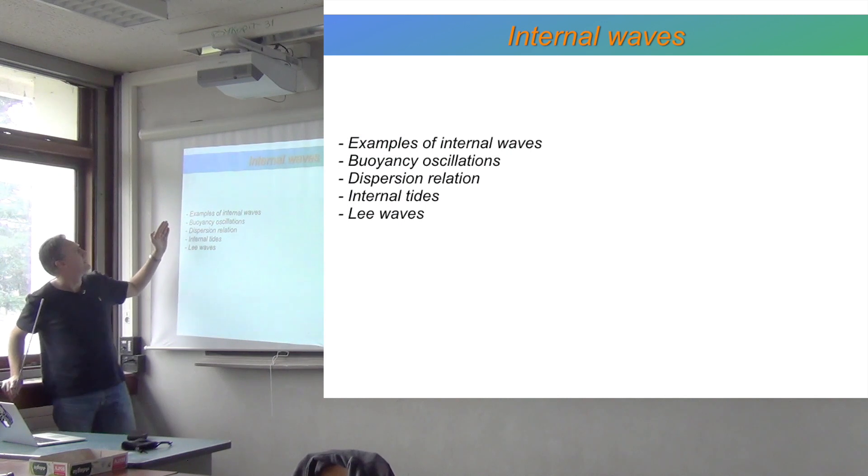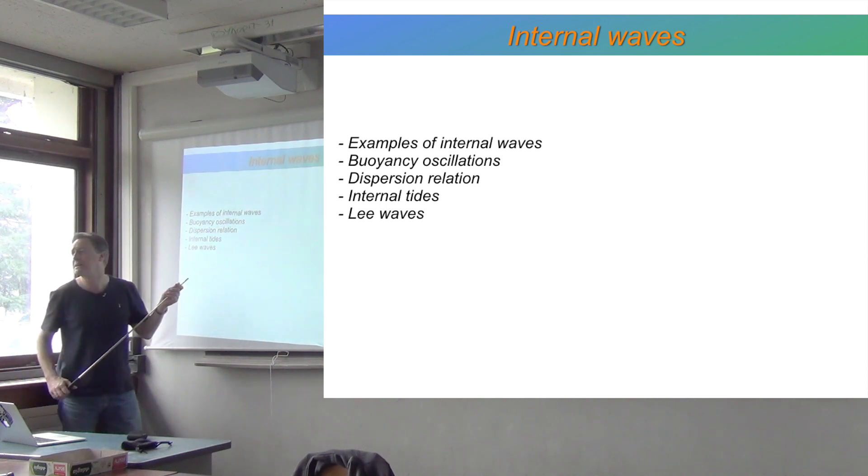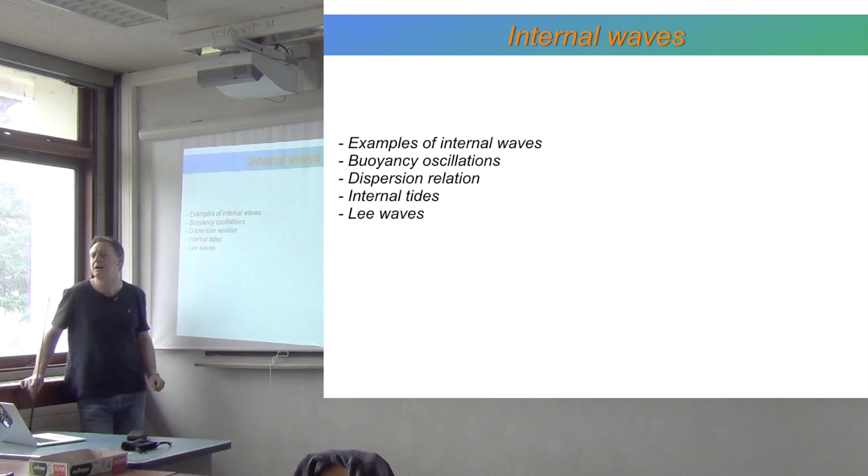So we'll start by looking at a few examples of internal waves. Then we'll talk about the kind of oscillations that give rise to internal waves, the buoyancy oscillations. And we'll derive the dispersion relation, as usual, for these kind of waves. And then at the end we'll start looking at different types of things that can trigger these waves. One of the things that can trigger internal waves is the tides. So the internal waves which are triggered by tides are called internal tides. And then lee waves, so the presence of topography at the bottom of the ocean or mountains in the atmosphere, that can also trigger internal waves.